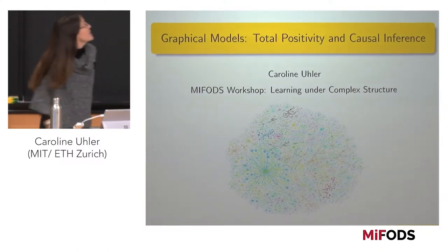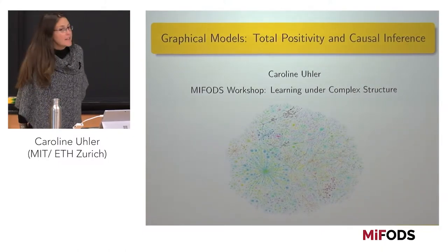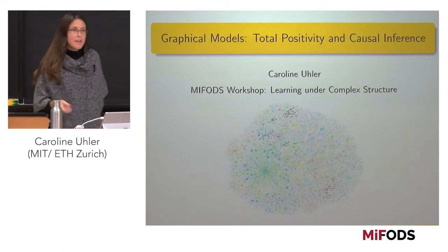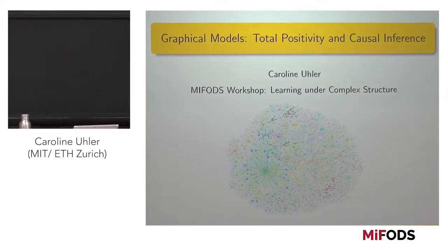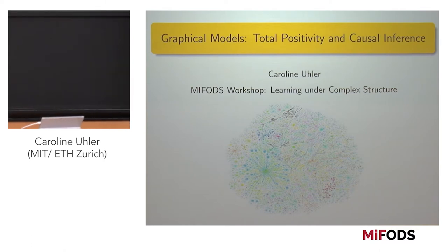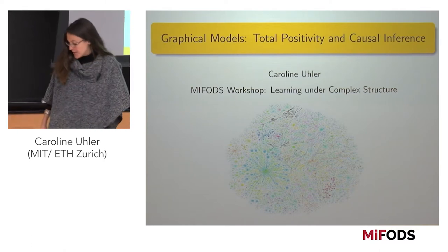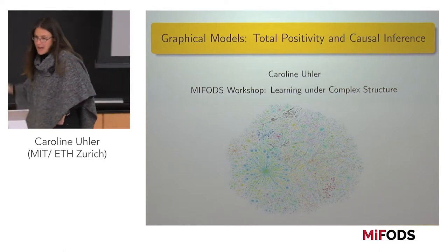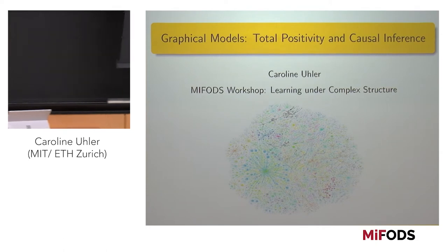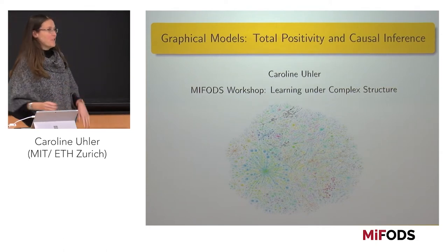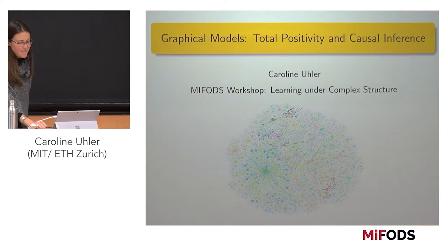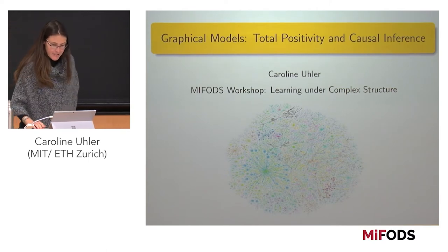I changed the title of my talk just slightly since Alina was just before me. I thought I could connect this MTP2 property that Alina was talking about to graphical models, and then tell you a bit about how that is completely different and actually incompatible with causality, which is the topic that I wanted to talk about. It's really incompatible in a very nice theoretical way.